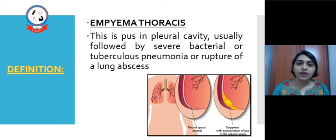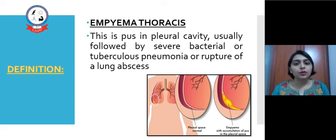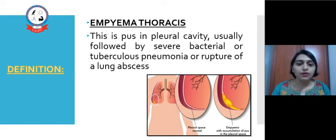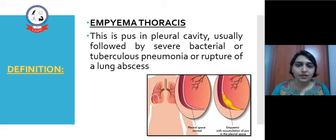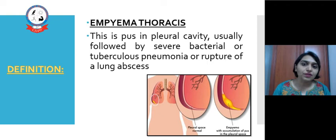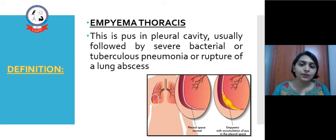By definition, Empyema Thoracis is pus in the pleural cavity, usually following a severe bacterial or tuberculous pneumonia or rupture of a lung abscess. From the definition alone we can understand the etiology of it.